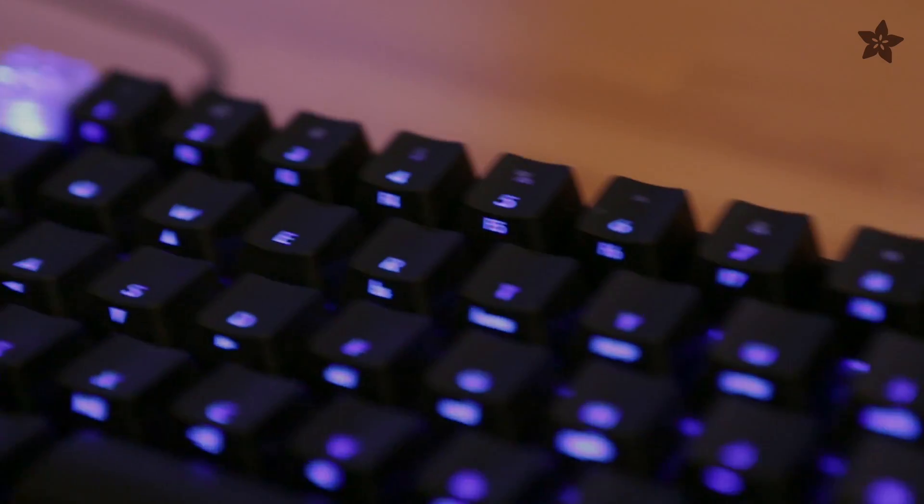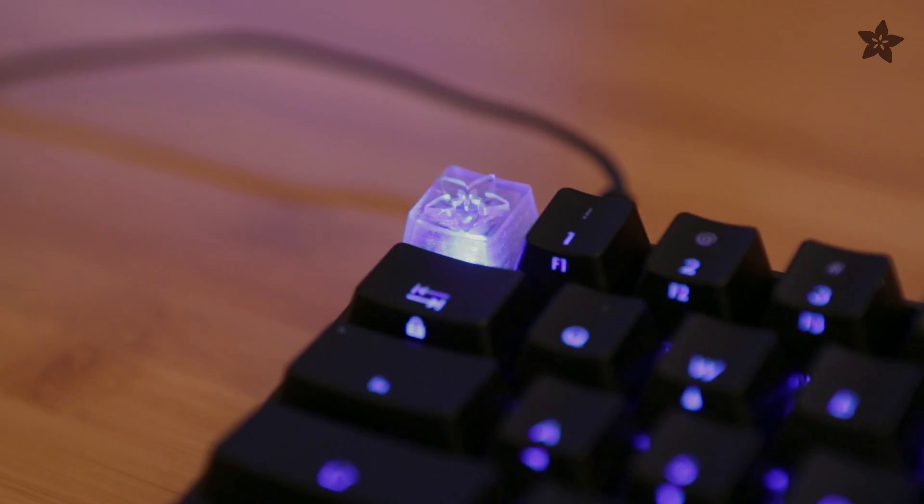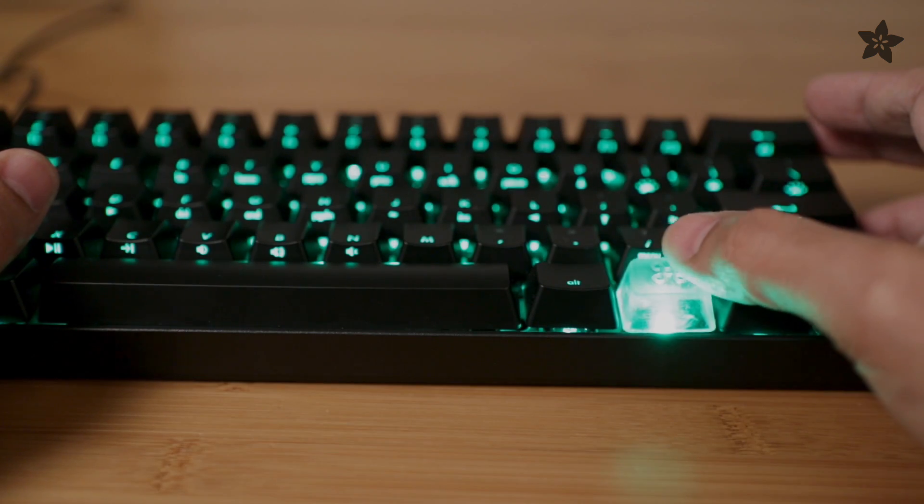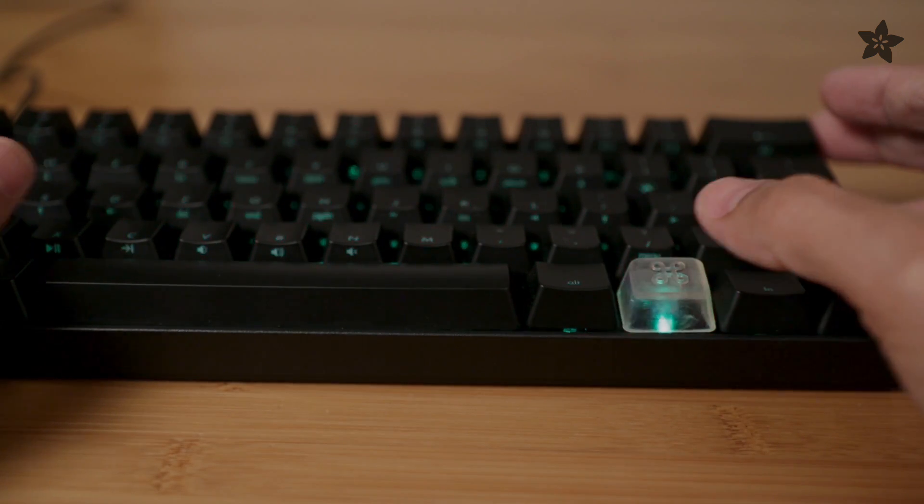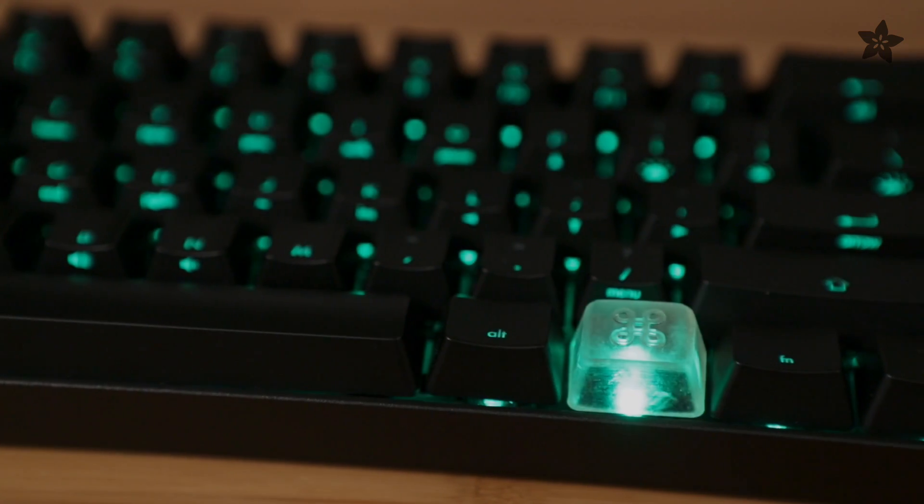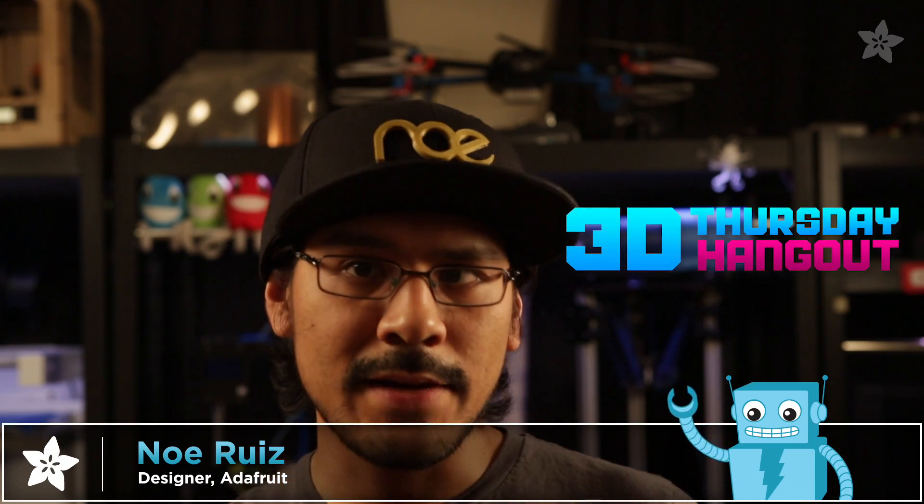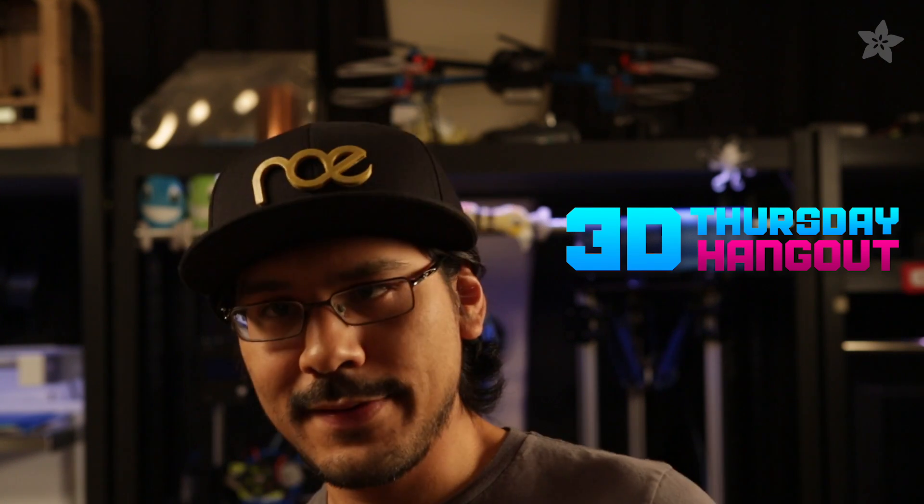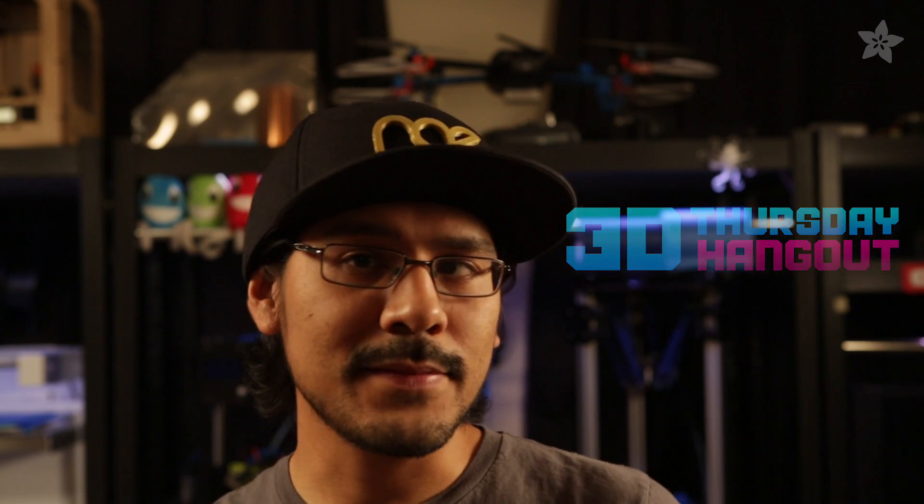But there you have it, custom 3D printed keycaps. We think this would be a pretty interesting accessibility project. Embossed keycaps would work really well for a braille keyboard, right? You can also let us know what you'd like us to build next. If you're interested in more CAD and slicer stuff, you can tune into our 3D printing show every Thursday. And if you haven't already, you can subscribe for more weekly videos from Adafruit. I'll see you guys in the next one. Bye everybody.